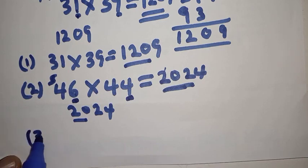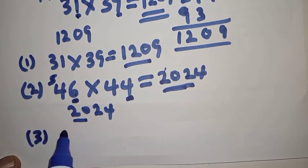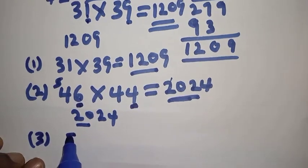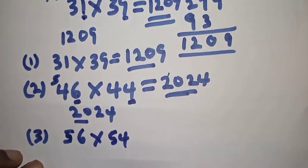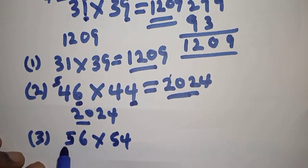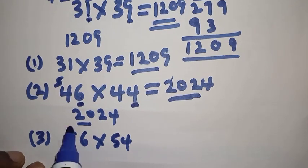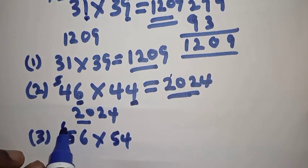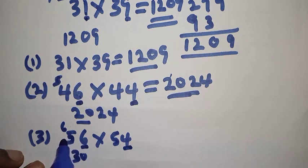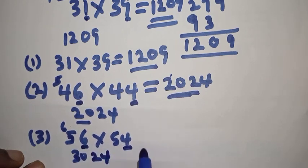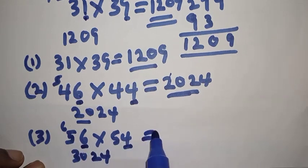Number three: 56×54. The tens digit is 5, the next digit after 5 is 6, so 6×5=30. Write 30. Then take the units digits: 6×4=24. Therefore 56×54=3024. Very fast, faster than a calculator!